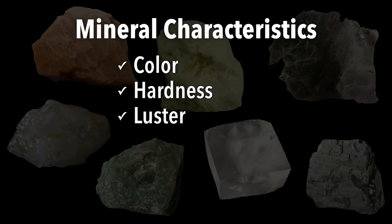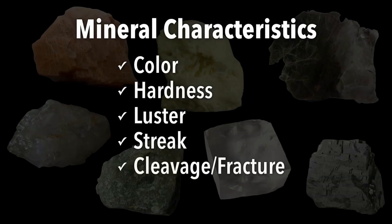We can also look at luster. The most simple luster is metallic or non-metallic. Streak would be the color of the mineral in its powdered form, and we would test that using a streak plate. Finally, we can look at how the mineral breaks. If it breaks predictably, we refer to it as displaying cleavage. If it breaks randomly, it displays fracture. There are also other characteristics, like is it magnetic, does it have a taste or odor, does it glow in ultraviolet light, does it bubble with acid, as well as a variety of other things.